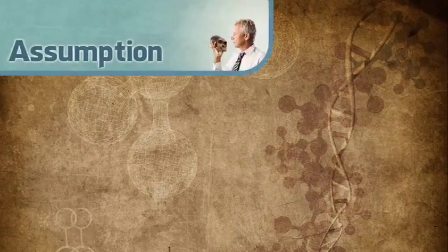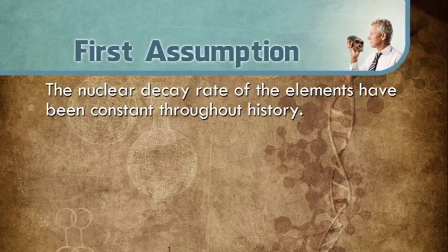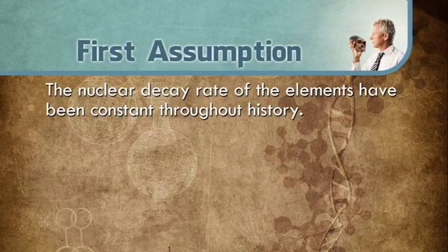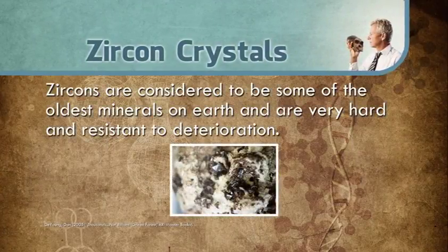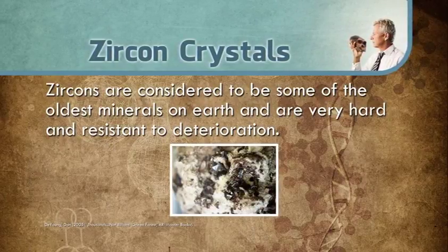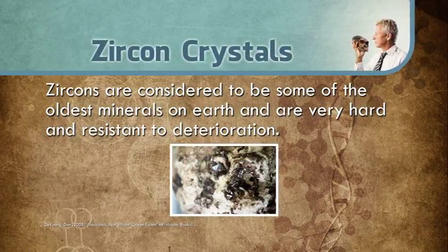Radiometric dating techniques fall victim to the same fallacies. All three aforementioned assumptions have been empirically shown to be unreasonable. Concerning the first assumption — this is the equivalent of assuming the crack in the bottom of the pail always remained the same size, even though the dog's activity caused the crack to expand. A team of geologists known as RATE conducted extensive research on this, investigating whether nuclear decay rates have been constant throughout history. The RATE team studied several zircon crystals from a drilling site in New Mexico. Zircons are considered some of the oldest minerals on earth and are very hard and resistant to deterioration, thought to preserve their contents well and safer from contamination.